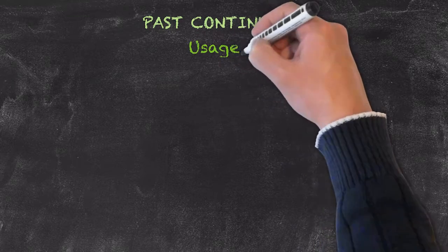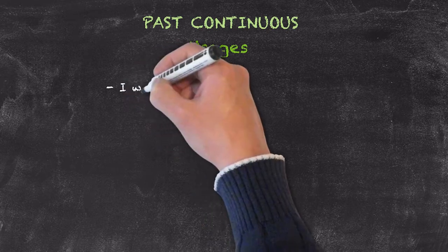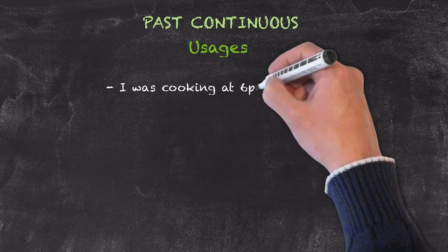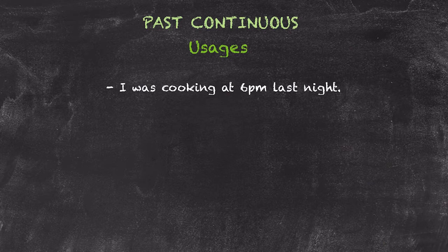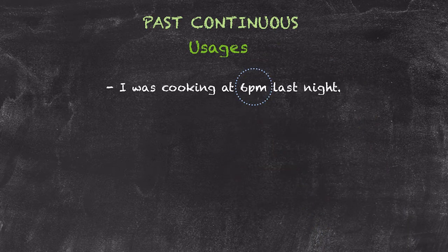The usage for the past continuous tense is expressing actions in progress at a time in the past. One example could be: I was cooking at 6pm last night. It was an action that began, occurred, and finished at a particular point in time in the past — 6pm last night.